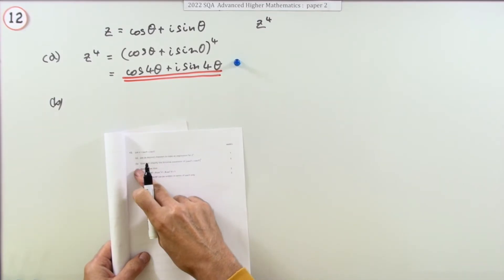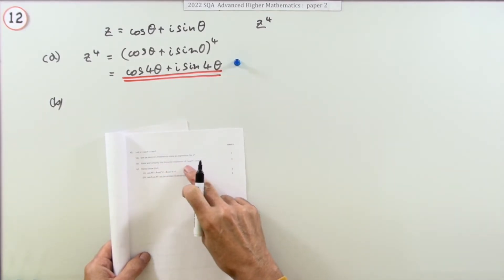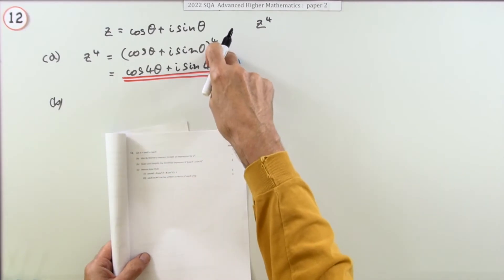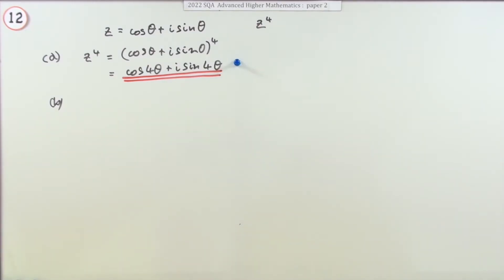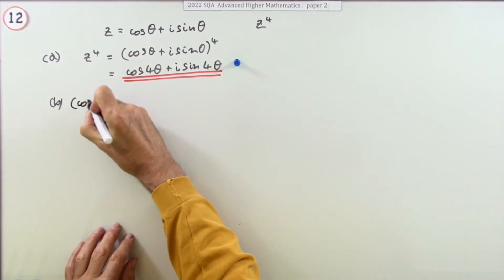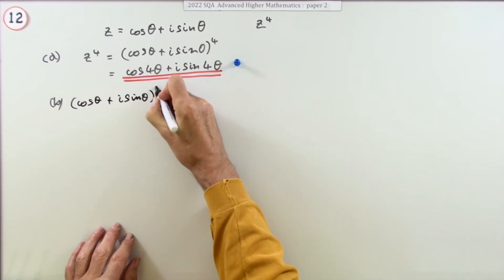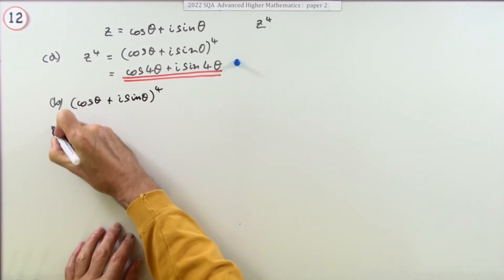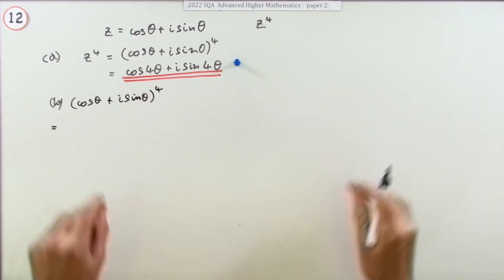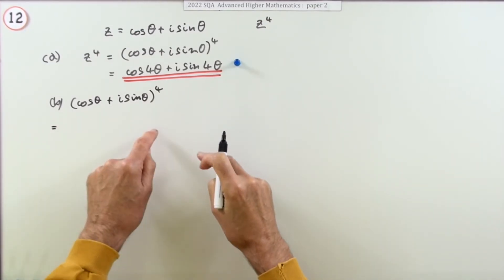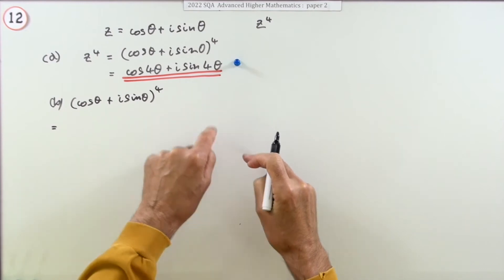Now part b. State and simplify the binomial expansion of this, of z to the power 4. Well cos theta plus i sine theta to the power 4 would be, better write it down here because it's going to stretch for five terms and each of those terms is going to have a constant, a cos and a sine in it.